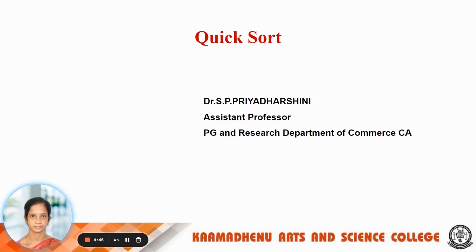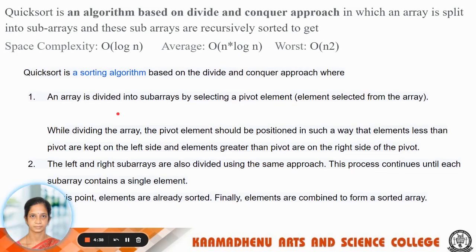QuickSort is an algorithm. It is the fastest sorting algorithm used to sort a list of elements. The QuickSort algorithm attempts to separate the list of elements into two parts and then sort each part recursively. In QuickSort, the partitions of the list are performed based on an element called the pivot. QuickSort is based on the divide and conquer approach, where the array is split into sub-arrays.